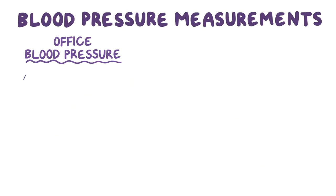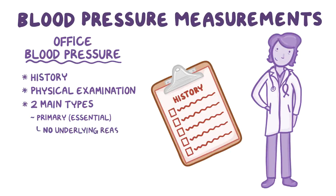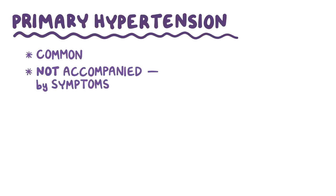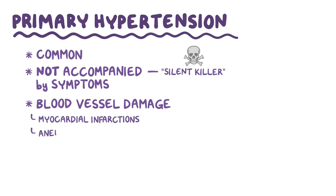The second step is taking the patient's history and physical examination. There are two main types of hypertension. Primary, or essential hypertension, has no clearly identifiable underlying reason, and secondary hypertension does have a specific identifiable underlying condition. Primary hypertension is way more common and generally isn't accompanied by symptoms. It's sometimes called a silent killer, because over time, pressure in the arteries slightly creeps up and causes blood vessel damage, which is a risk factor for serious problems like myocardial infarctions, aneurysms, and strokes.